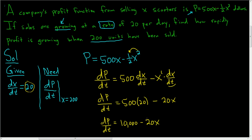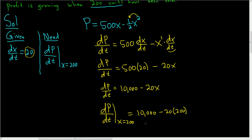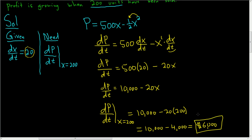We want dP/dt when X is equal to 200, so we plug in 200: dP/dt equals 10,000 minus 20 times 200. That gives 10,000 minus 4,000, which equals 6,000. So the profit is growing at $6,000 per day. That is the final answer — I hope this helps.